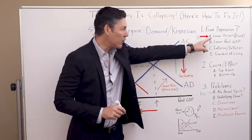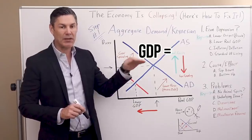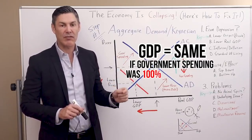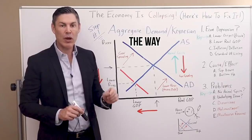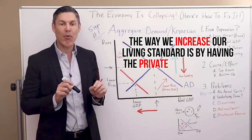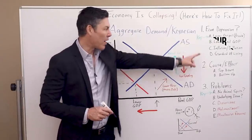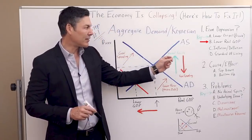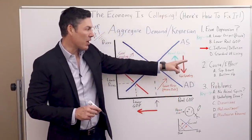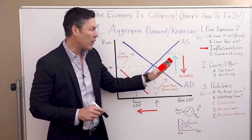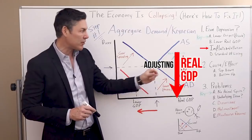First of all, we have to look at the output of the private sector. We could have GDP remain the same if government spending was 100% of the economy, but none of us would say the economy is healthy or fundamentally sound. The way we increase our living standard is by having the private sector produce more goods and services efficiently. So in a depression, the private sector is responsible for less and less GDP. The real GDP of the private sector is going down. We could have an inflationary depression or a deflationary depression. If prices are going up but GDP isn't going up at the same level, that would be a decrease in real GDP when you adjust for inflation.